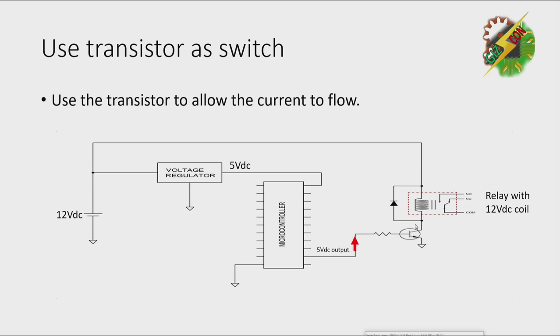Then, by applying current at the base, the current at the collector will flow, and the current at the emitter also.